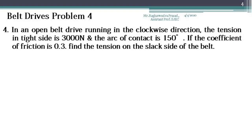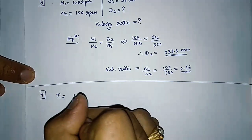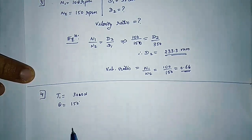Next we will move on to the fourth problem. In an open belt drive running in clockwise direction, the tension in the tight side is 3000 N and arc of contact is 150 degrees. If the coefficient of friction is 0.3, find the tension on the slack side of the belt. Tension on the tight side is T1 and tension on the slack side is T2. Arc of contact, theta, is 150 degrees, which needs to be converted to radians. Mu is 0.3.